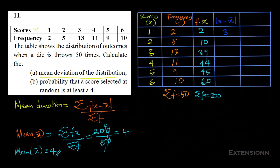Continuing the |x - x̄| column: |3-4| = 1, |4-4| = 0, |5-4| = 1, |6-4| = 2. So the full |x - x̄| column is: 3, 2, 1, 0, 1, 2.